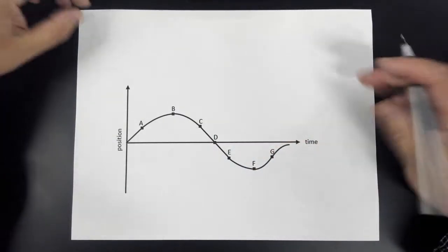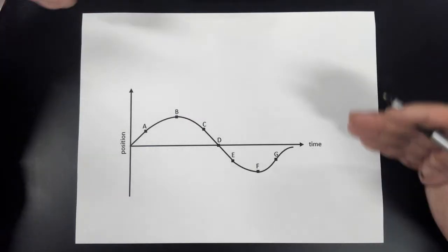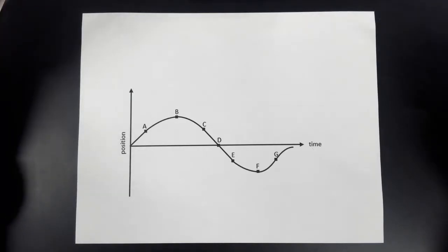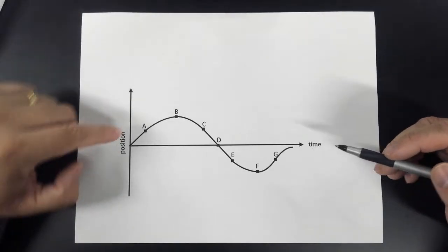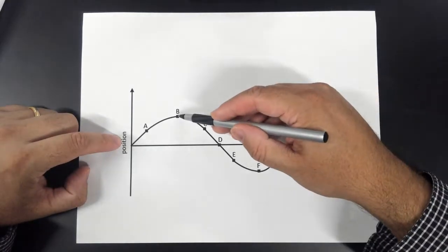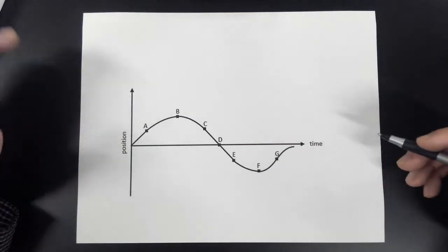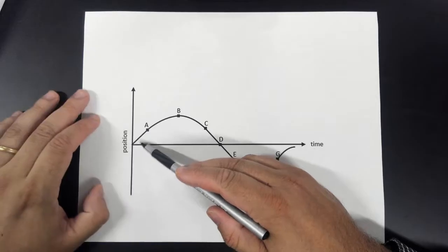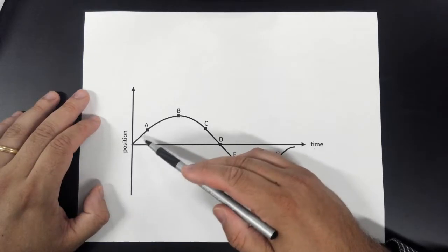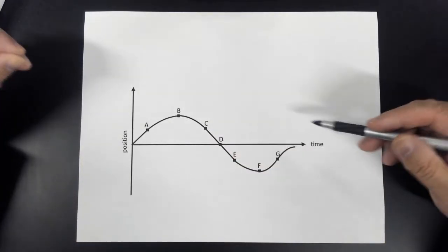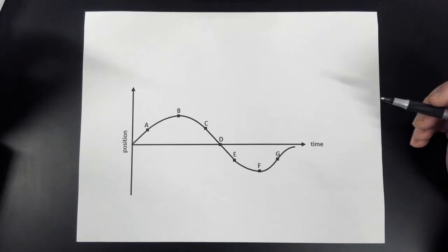Some of the questions you might be asked are: where is it going the fastest? In a position graph, you can't tell the speed just by where it is. You have to look at how much is changing. The thing that tells us how fast it's going is the slope. The steeper the slope is, the faster it's going. The less steep it is, the slower it's going.